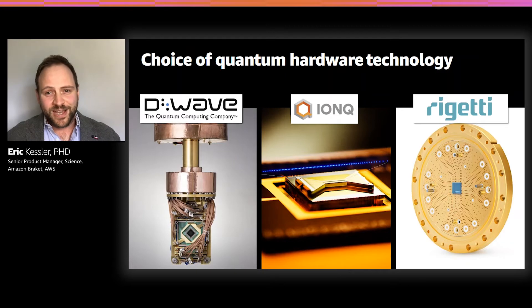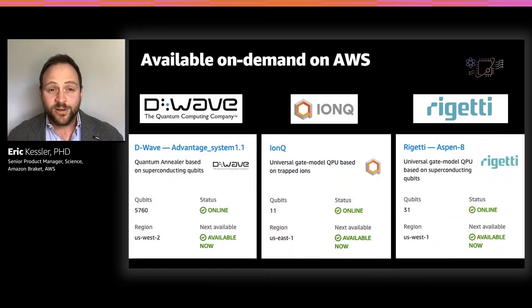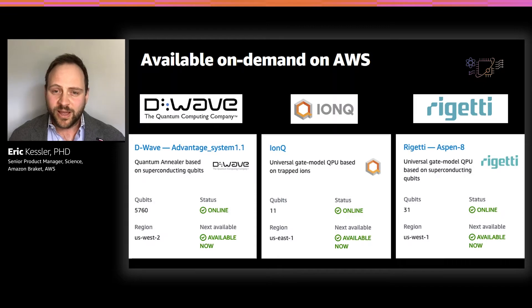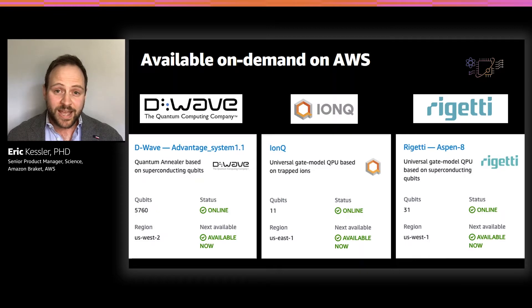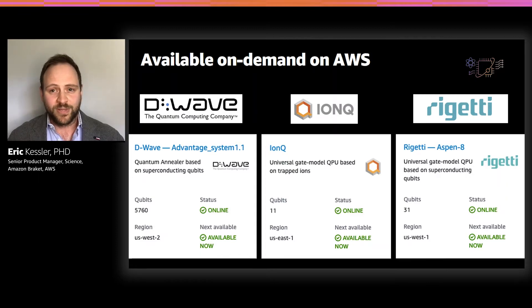And in the fullness of time, you can expect that we will support any major quantum computing platform and technology on Amazon Braket and make that available to our customers. All of this is fully integrated into AWS to provide user access management, security, logging, monitoring, and more. You can manage your resources like with any other service on AWS. And of course, most importantly, with Amazon Braket, you pay only for what you use and without any upfront commitment. You can just open your AWS console and get started today.